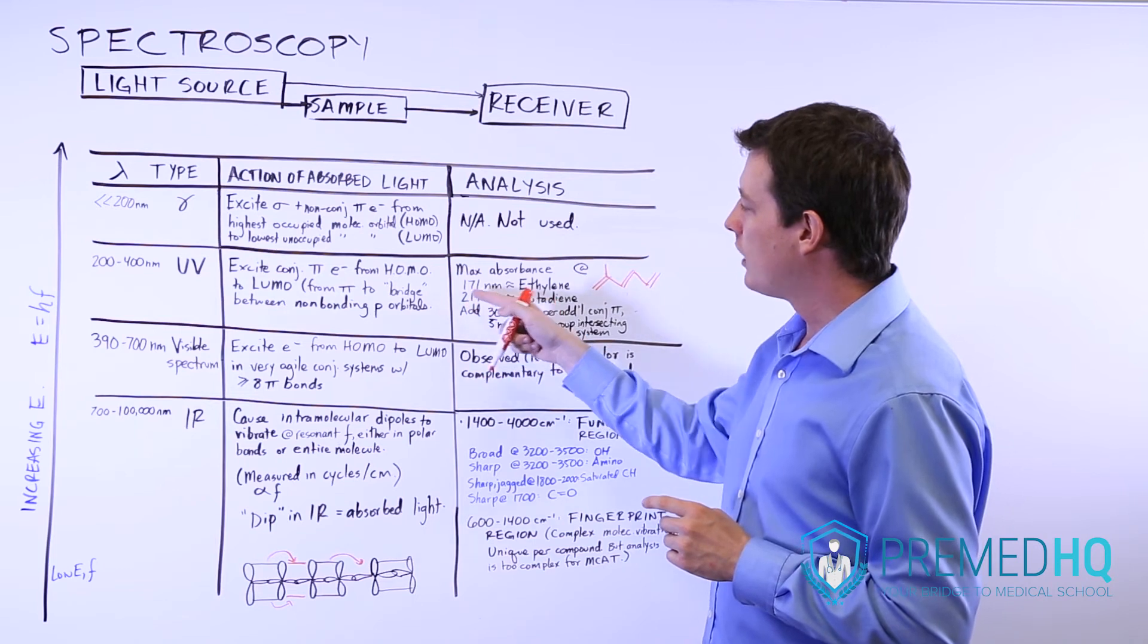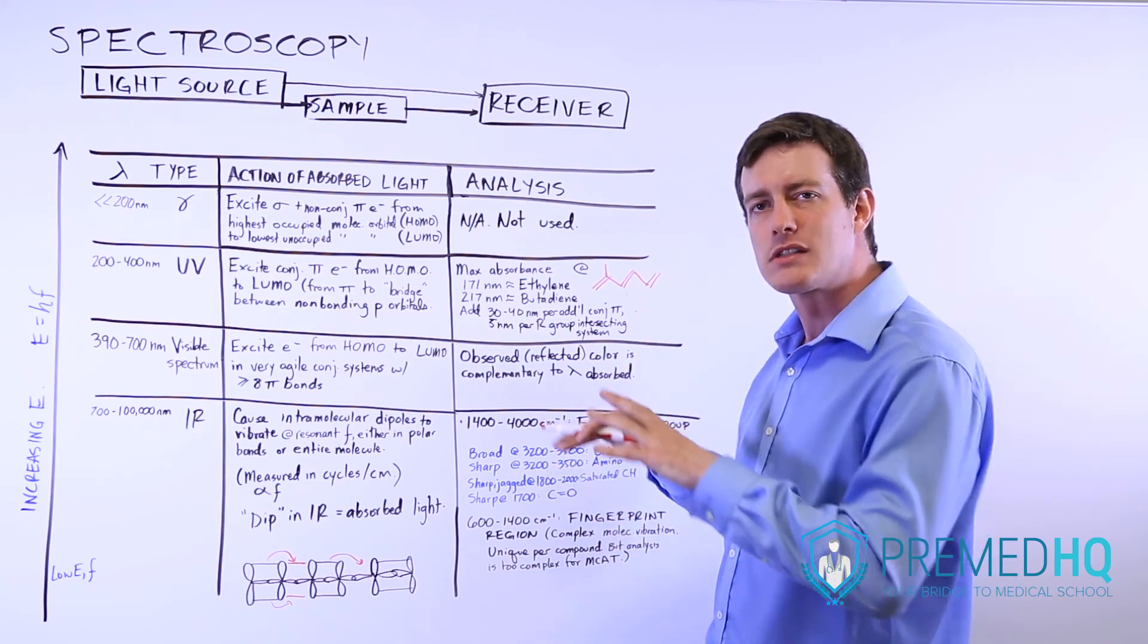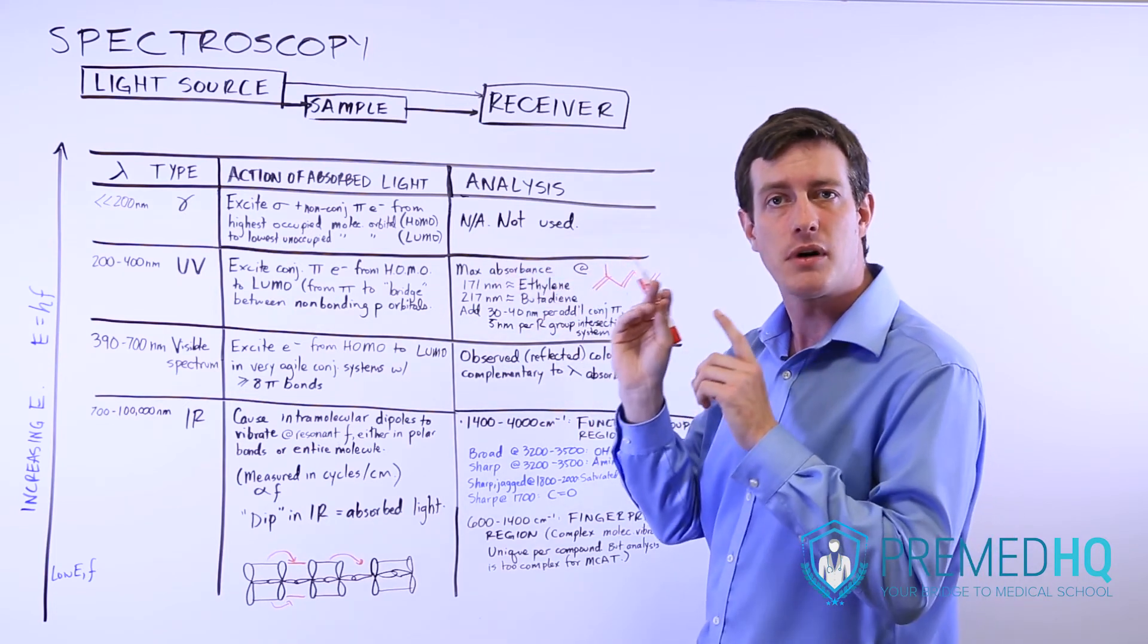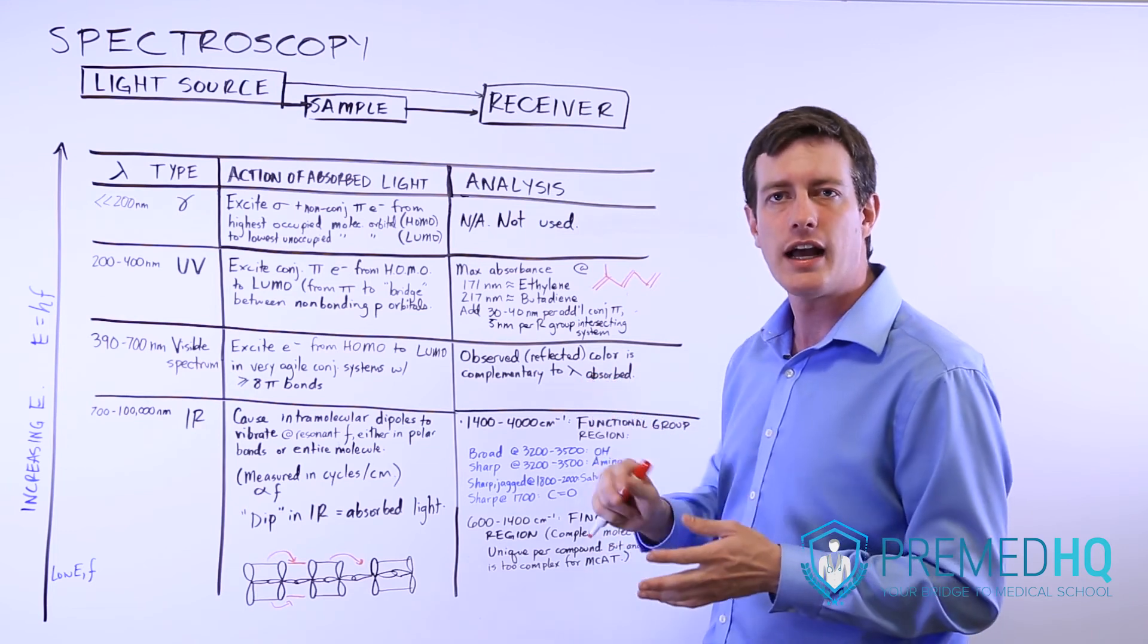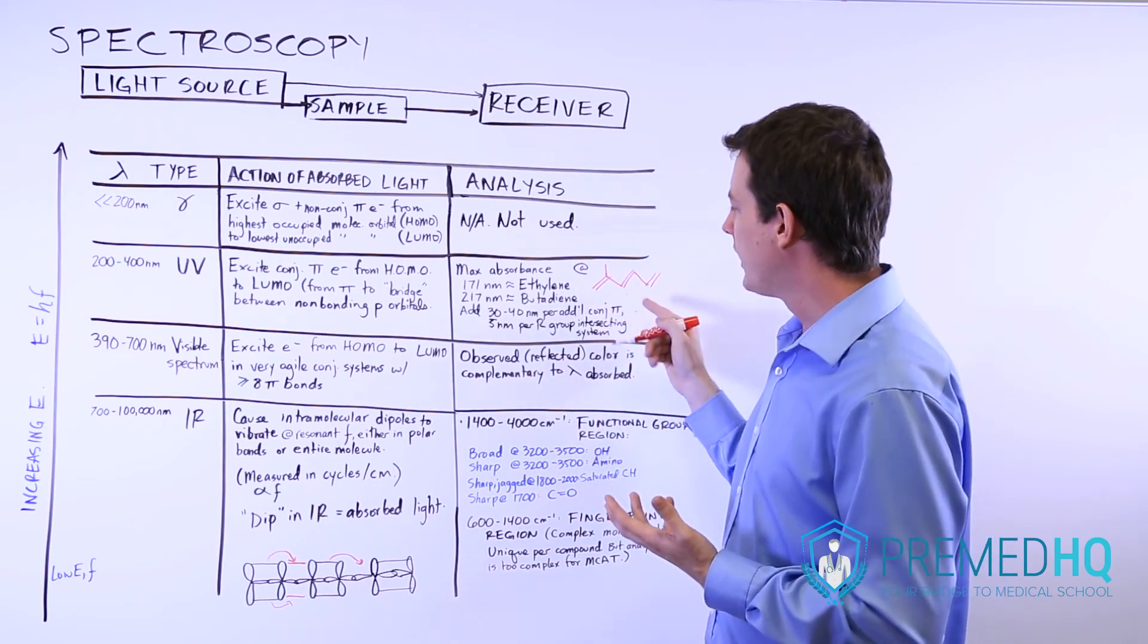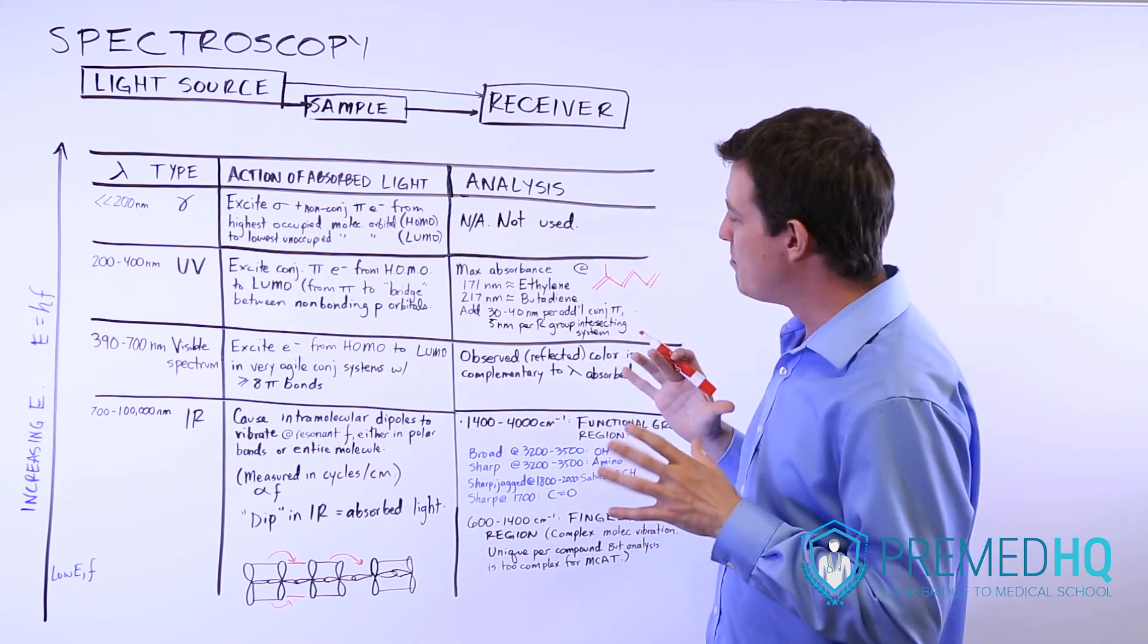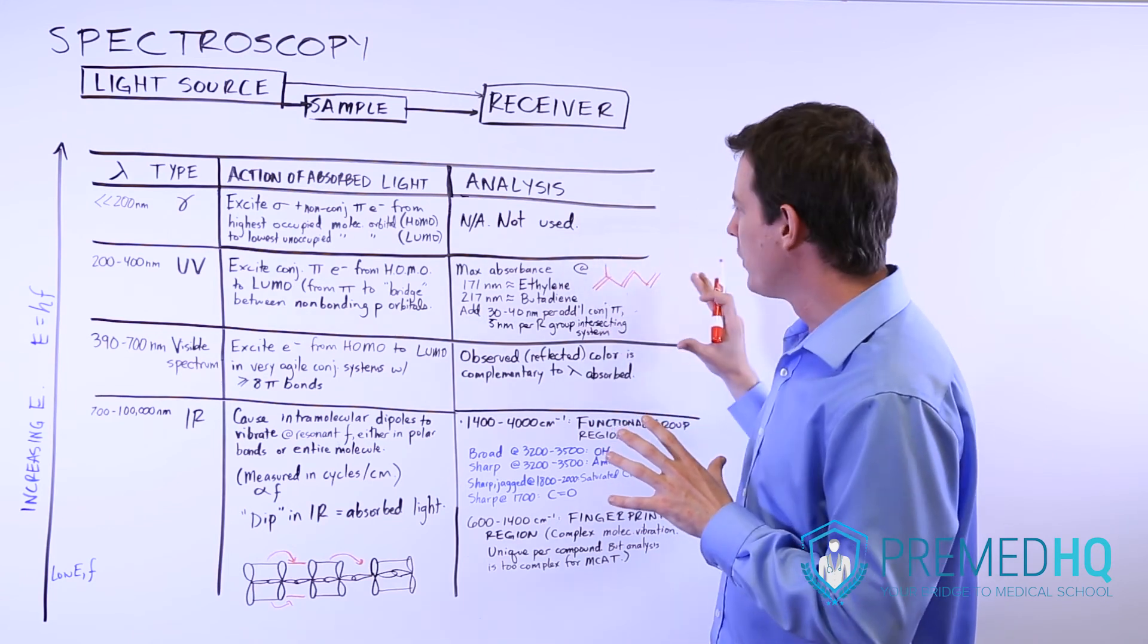Remember that if you get to a higher wavelength, more nanometers of wavelength, that means that the frequency is going to be going down. And if the frequency goes down, that means it's lower energy light. So the highest energy light that you can use in UV spectroscopy will either be 171 nanometers for ethylene, which is simply a double bond between two carbons, or 217 for butadiene, which is the smallest possible conjugated system you can have, double bond, single bond, and double bond. And then for every additional double bond that you add to that conjugated system, for every additional pi bond, you can add 30 to 40 nanometers to that wavelength, and you'll see the maximum absorbance there. And then for every R group that intersects it, you can add about five nanometers. And it's an inexact science, but it is something that can give you a big clue about what's going on with your conjugated system.